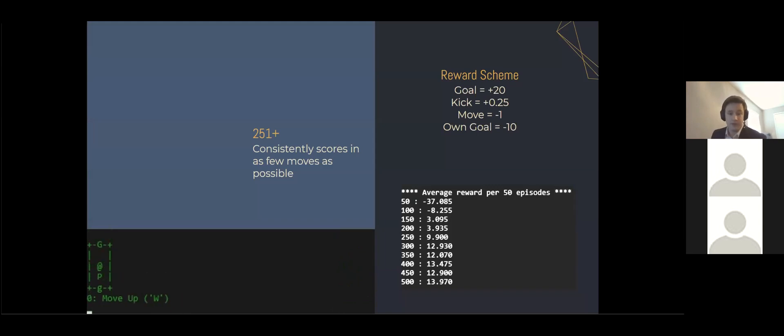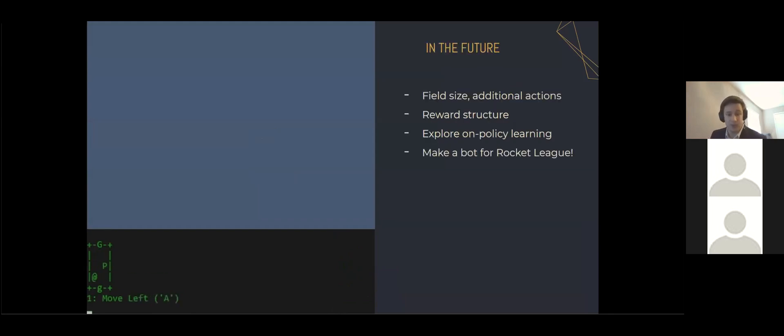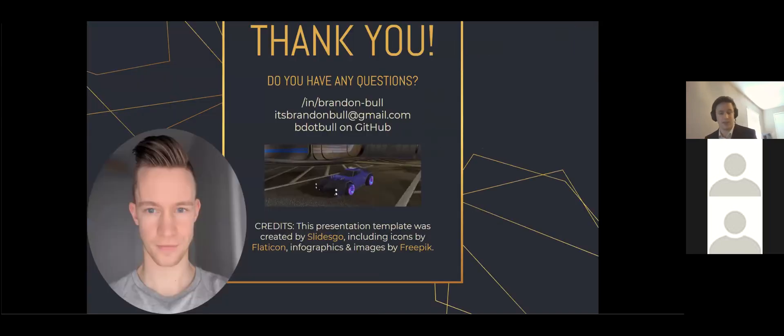From around game 251 on, the agent will slot the shot in as few moves as possible and it doesn't get much better than that. In the future, I plan to experiment with field size, new actions, and reward structures as well as explore other avenues of reinforcement learning on my path to innovate in the space of Rocket League bots. Thank you kindly for your time. It was a pleasure to present my work.